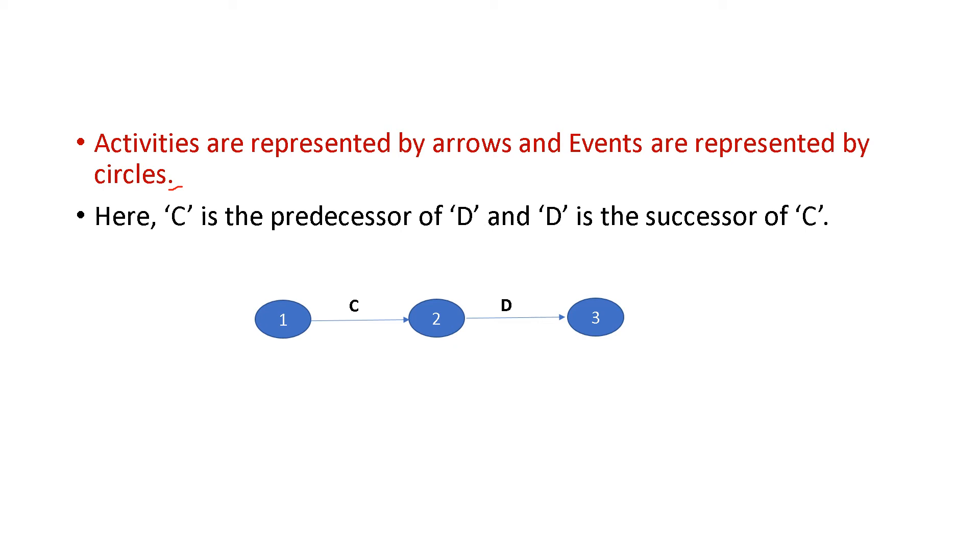Here C is the predecessor of D. C is coming before D. So C is the predecessor of D. D is the successor of C. Hope this much is okay for you.